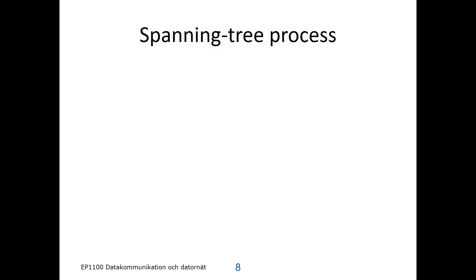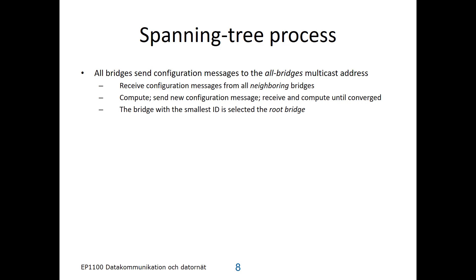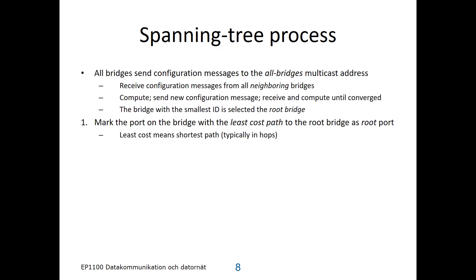The spanning tree process consists of all bridges sending configuration messages to the multicast address called 'all bridges'. A bridge receives configuration messages from all neighboring bridges and uses them to determine whether it should update its own configuration message. If it changes this message it sends out a new one. This way the bridges receive configuration messages, do some computation, and send out new configuration messages, and this goes on until the computation of the tree has converged. The bridge with the smallest ID is selected as the root bridge, which is a unique choice that all bridges in the network can agree on.